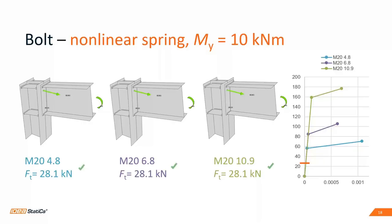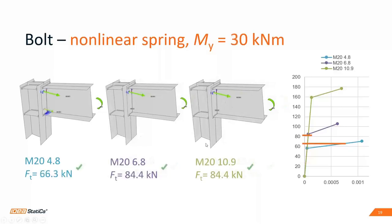This is because we are still in the elastic range of deformation. But if we continue to increase the bending moment, with 30 kN·m we are already in the plastic area of deformation for the lowest bolt grade. Due to this, redistribution of stresses begins to other components — the tension force cannot rise at the same rate as with the other two bolt grades.